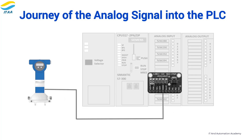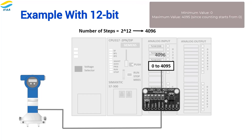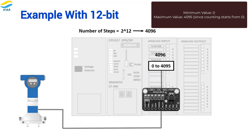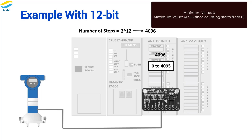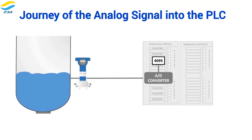For example, in a 12-bit resolution PLC, this raw value might range from 0 to 4095 counts. 12-bit resolution means the system can measure 2 to the power of 12 different steps, which is 4096 steps. So a 12-bit system can measure a signal in 4096 different values — minimum value 0, maximum value 4095, since counting starts from 0. As the tank level changes, this raw count changes accordingly.